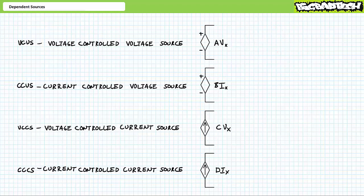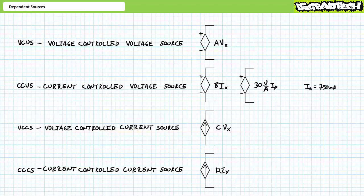Two: current-controlled voltage sources, where output voltage is proportional to some constant B times the controlling current value Ix. Constant B has dimensions of volts per amp. For example, consider a current-controlled voltage source where output voltage is 30 volts per amp times Ix, and Ix happens to be 750 milliamps. The output would be 30 volts per amp times 750 milliamps, or 22.5 volts. If the controlling current rose to 800 milliamps, the output would be 30 times 800 milliamps, or 24 volts.